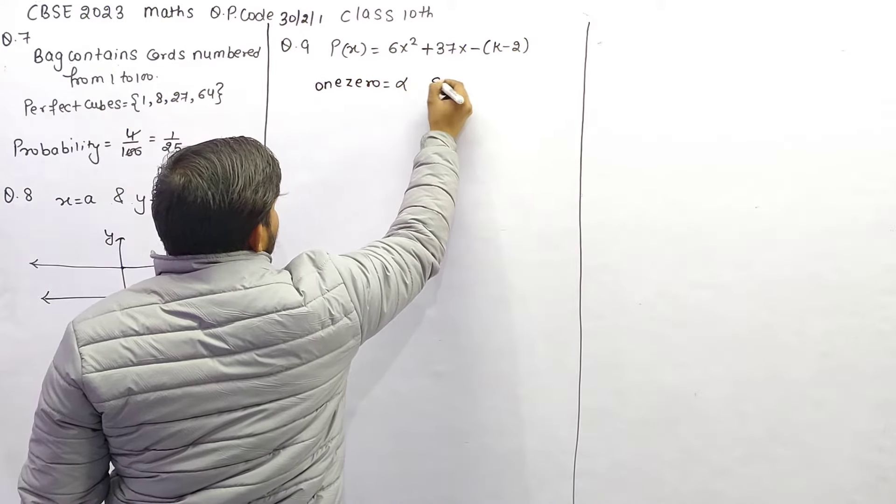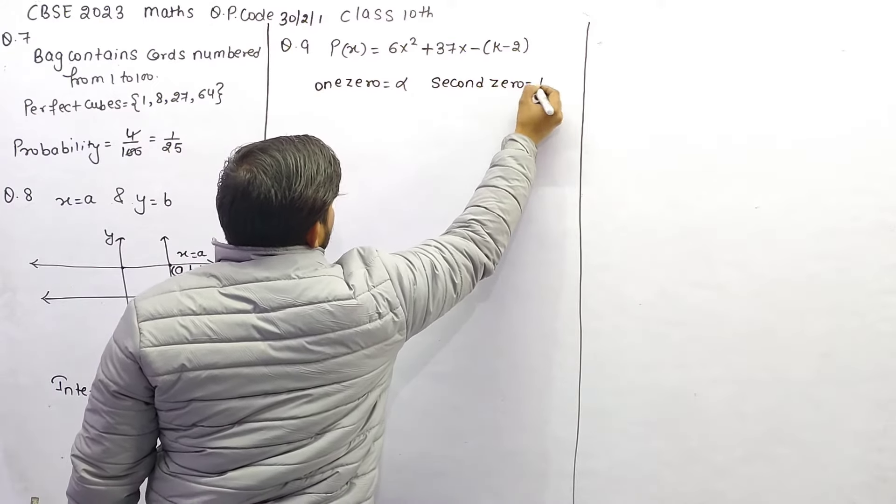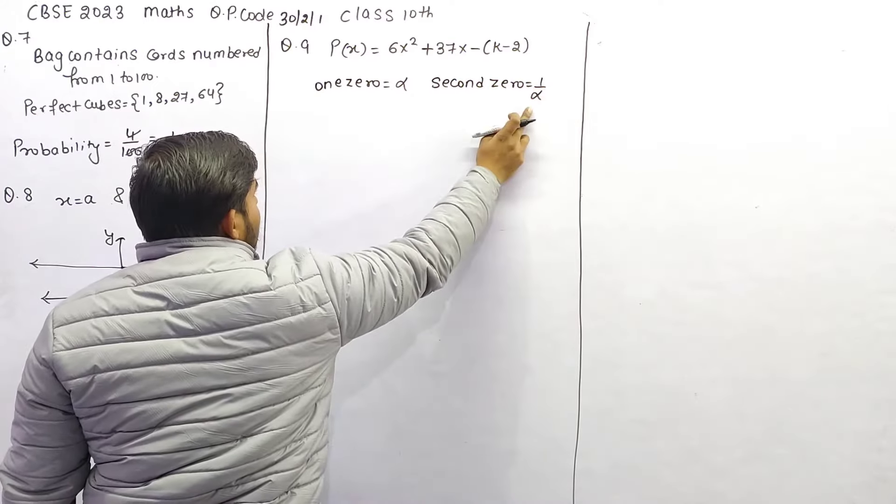अलफा है, तो second zero क्या होगा? वो 1 upon alpha होगा, एक दूसरे का reciprocal,